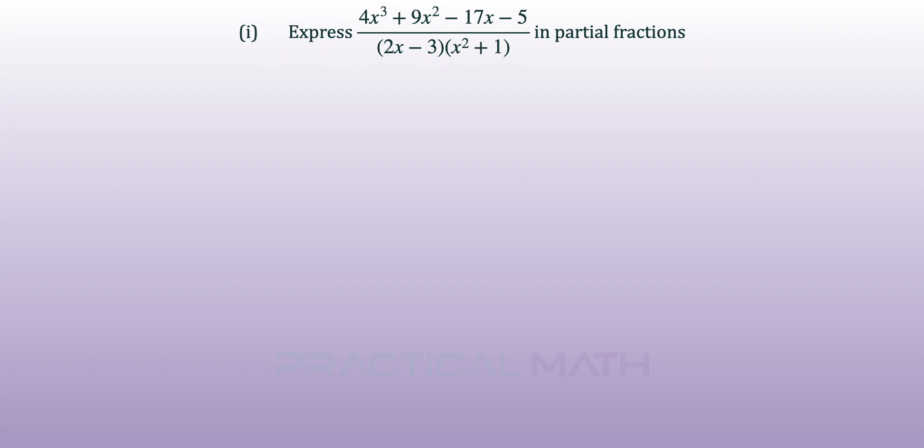For the first part of this question, we are presented with an improper algebraic fraction and we have to express it in partial fractions. So let's begin by expanding the denominator, giving us 2x cubed minus 3x squared plus 2x minus 3.